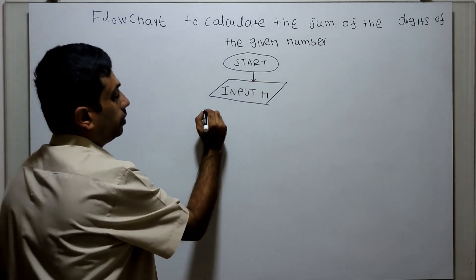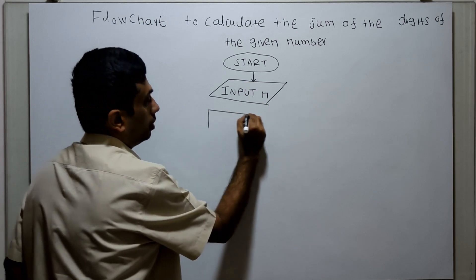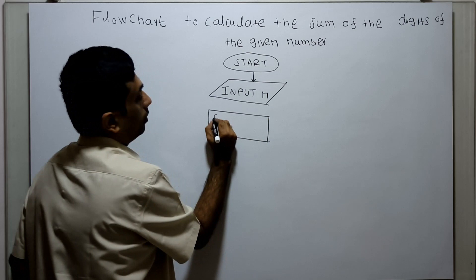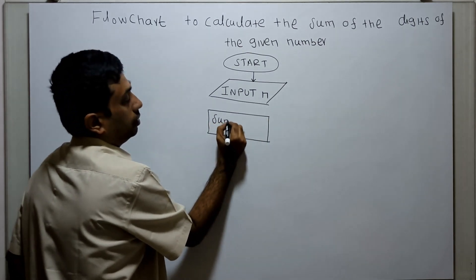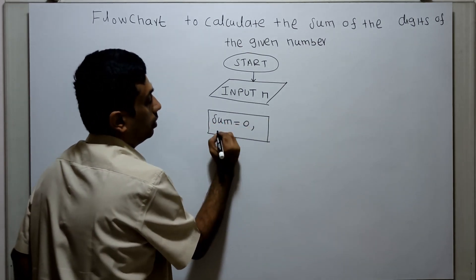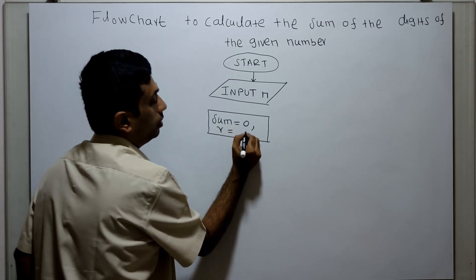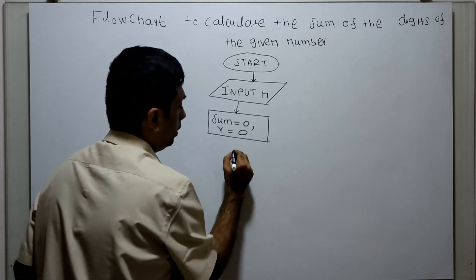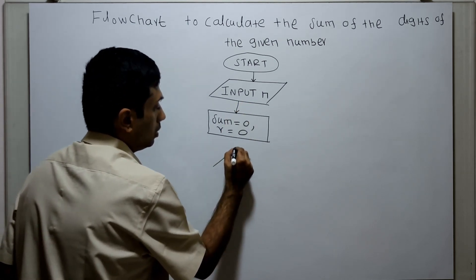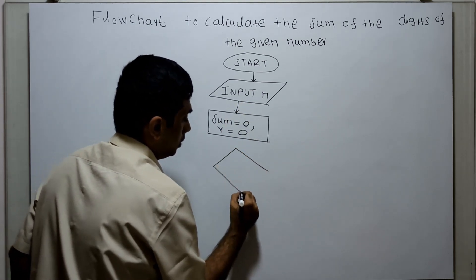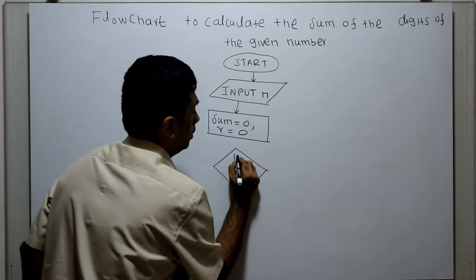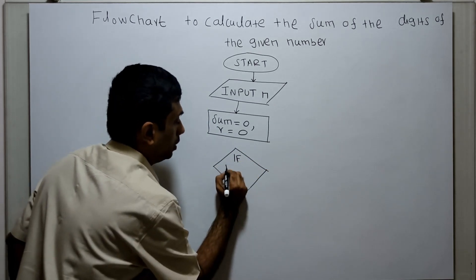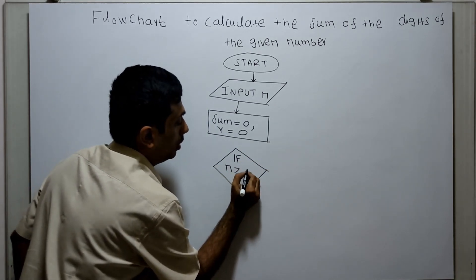Now, I am initializing two variables: sum equal to 0, and r equal to 0. Next, I am checking if n is greater than 0.